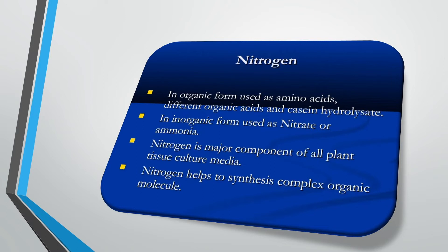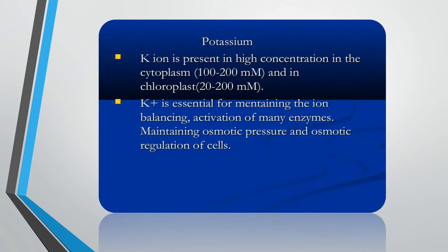Nitrogen helps to synthesize complex organic molecules. Potassium (K) is present in high concentration in the cytoplasm, 100–200 mM, and in chloroplast, 20–200 mM. K⁺ is essential for maintaining ion balance, activation of many enzymes, maintaining osmotic pressure, and osmotic regulation of cells.